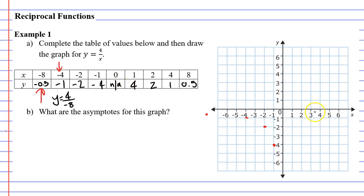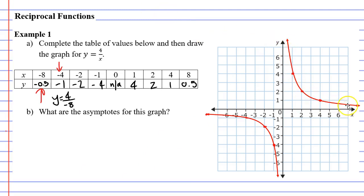When x is 1, y is 4. When x is 2, y is 2. When x is 4, y is 1. And when x is 8, which is past the Cartesian plane, y is 0.5. When we join our dots and put down our curves, you'll see that you get two branches, one on each side.